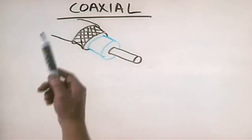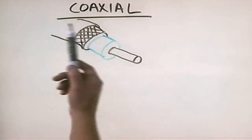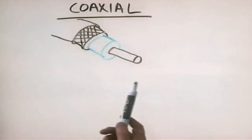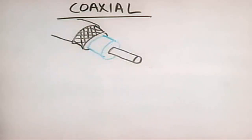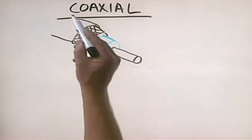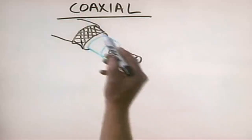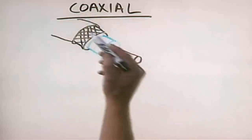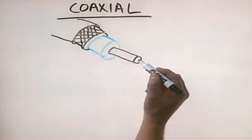You still need to know about it because you may run into circumstances when you have to support it. However, be aware that it's kind of going away. Coaxial cabling is called coaxial because all the wires, all the conductors, share a common axis.